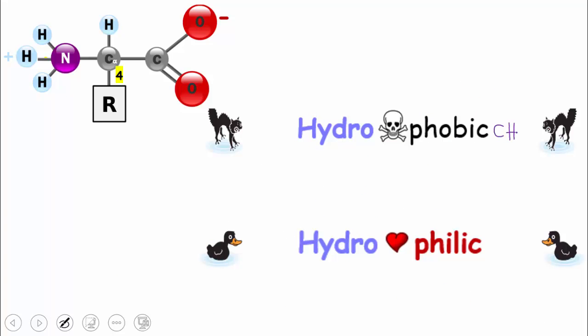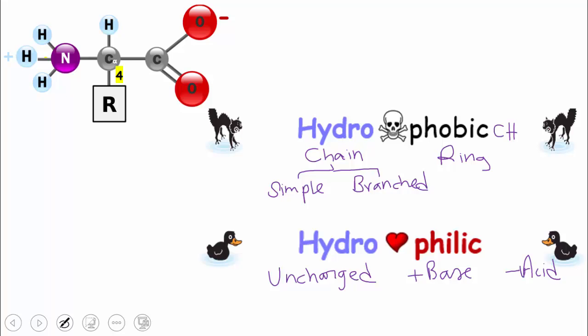Just to complicate things a little bit more, the hydrophobic and hydrophilic group are further subclassified. Hydrophobic is mainly formed by carbons and hydrogens, and it is subclassified into either chain structure or ring structure. And the chain is further subclassified into being simple, that is a straight chain or branched chain. While for the hydrophilic, it is further subclassified into uncharged group that has polar bonds but doesn't have any net charge, a basic group that has a positive charge, and an acidic group that has a negative charge.